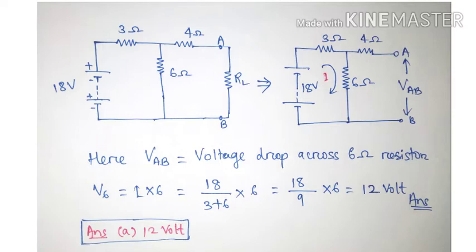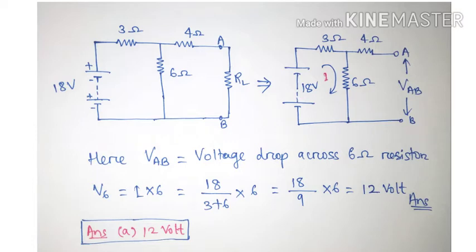There is no current flowing through the 4 ohm resistor because this 4 ohm resistor is open circuited at the terminal. So the voltage across the 6 ohm resistor is equal to the voltage across the AB terminal, or the open circuit voltage. We can calculate this using Ohm's law: V6, the voltage across the 6 ohm resistor, equals I into 6, where I is the current flowing through the loop.